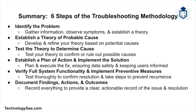To summarize the six steps: Step one — identify the problem by gathering information and observing symptoms. Step two — establish a theory of probable cause. Step three — test the theory to confirm or rule out causes. Step four — establish a plan of action and implement the solution, ensuring data safety and user communication. Step five — verify system functionality and implement preventative measures. Step six — document findings, actions, and outcomes to provide a clear record of the issue and resolution.